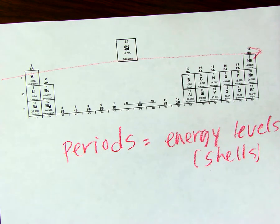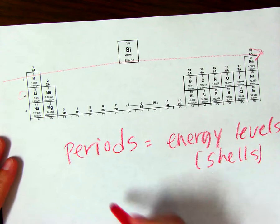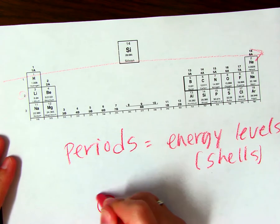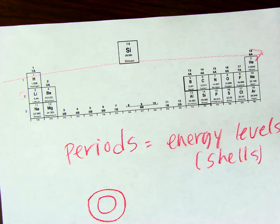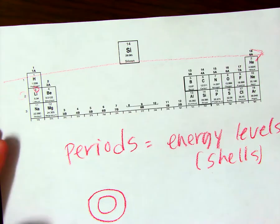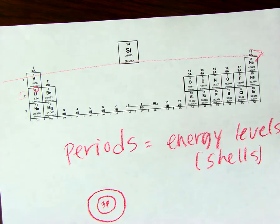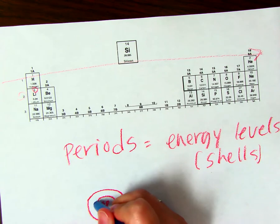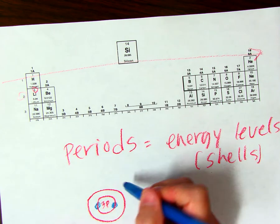For instance, let's look at lithium. Because it's on row two, we know it will have two shells. The atomic number tells us how many protons and how many electrons there are. And since the first level can only hold two, the third one should go on the outer level.